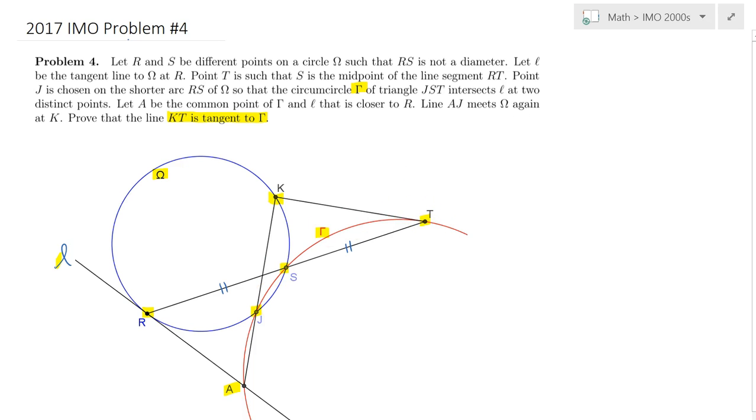To begin with, I would like to make the following claim: that RK is in fact parallel to AT. So let me draw RK and then AT as well, and I claim that those two lines are parallel.